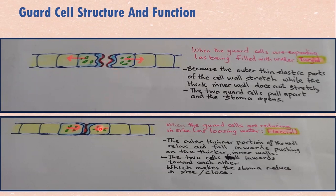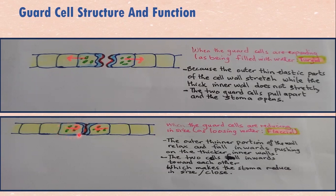When water flows out of the guard cells, the guard cell shrinks and becomes smaller because the vacuoles shrink. The elastic outer walls shrink and fall inward. This guard cell falls in, and the other guard cell also falls in, closing the stoma. This is how the guard cells operate to open or close the stoma.